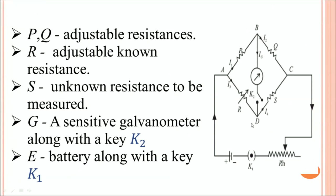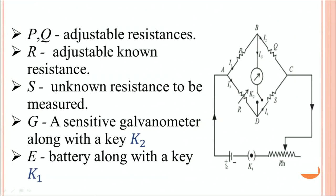Similarly, R is an adjustable variable known resistance. S is an unknown resistance, the value of which is to be determined. There is a galvanometer connected in the circuit, and keys which can cause the current to flow or not flow. You have a battery which provides a certain voltage, and a rheostat that controls the amount of current passing through the circuit.